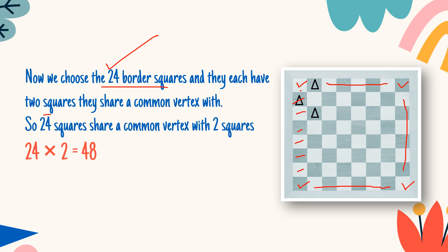Now if we consider this one square, it is sharing the vertex with 2 other squares. So every border square will share with 2 squares. 24 border squares multiplied by 2 gives you 48.